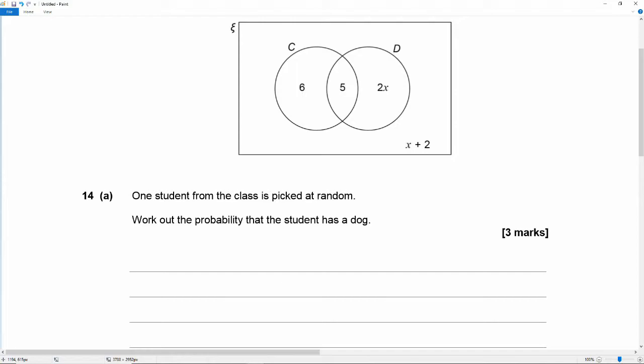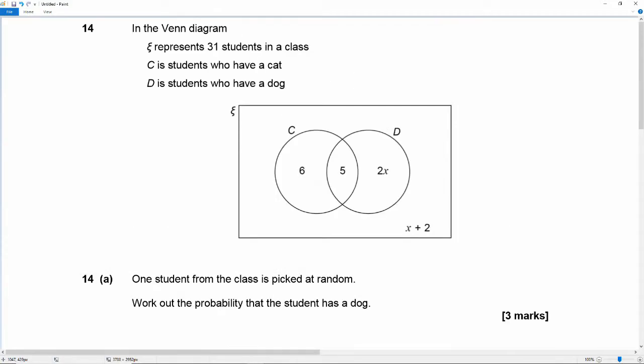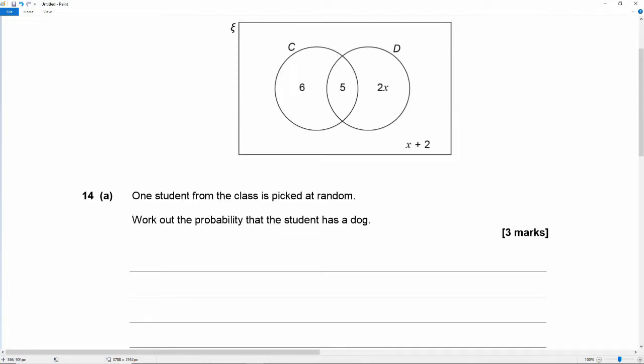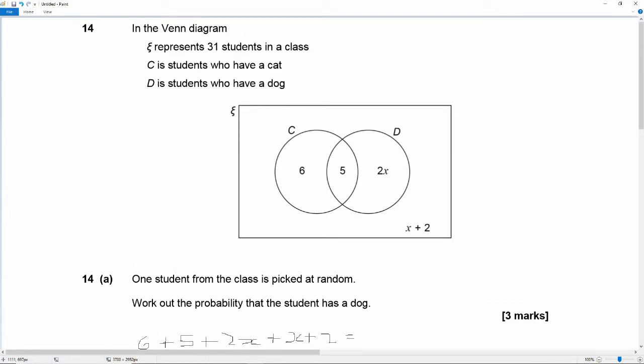I think what we can do is say that 6 plus 5 plus 2x plus x plus 2 is going to make the whole number of students which is 31. So I'm going to say 6 plus 5 plus 2x plus x plus 2 is equal to 31.